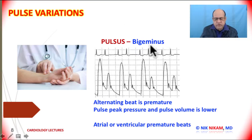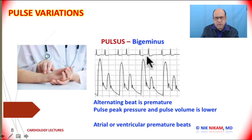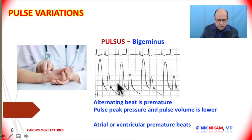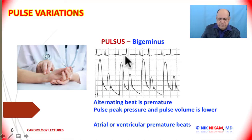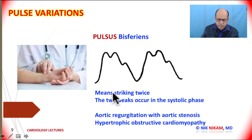Pulsus bigeminy can be found in patients with atrial or ventricular premature beats. You can usually appreciate this on arterial line monitoring on the screen. This may also signal that you need to check electrolytes and look for evidence of ischemia that may be precipitating these ectopic beats.